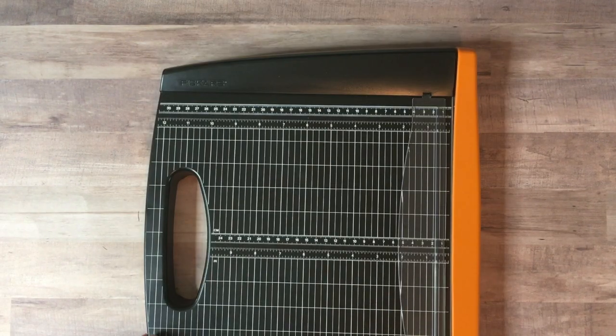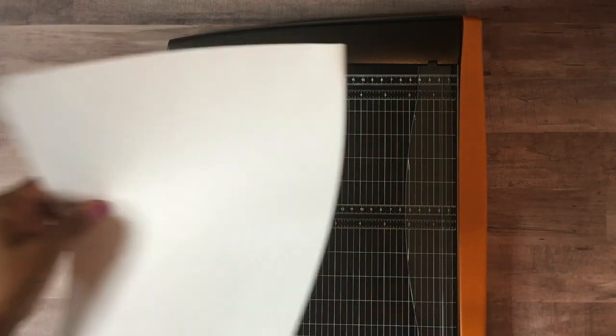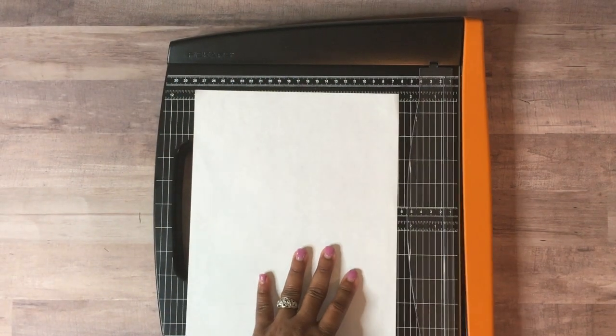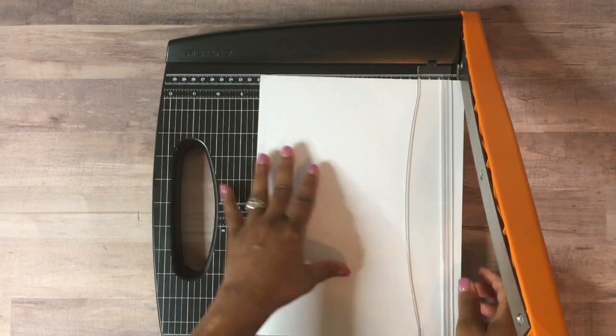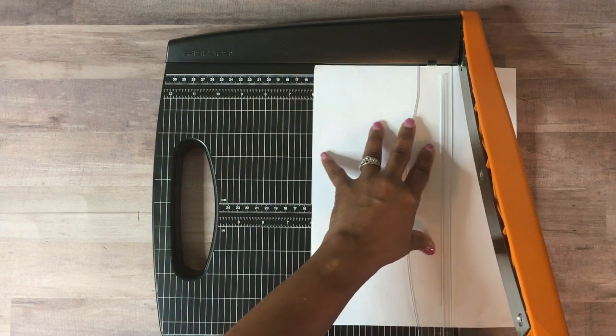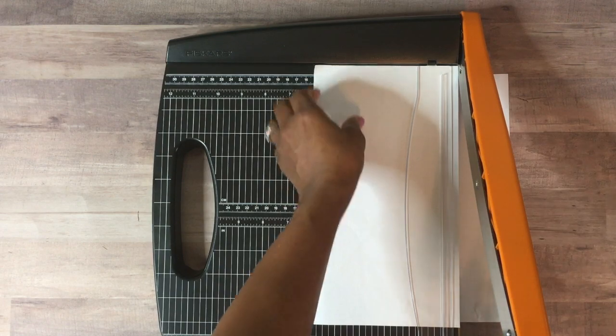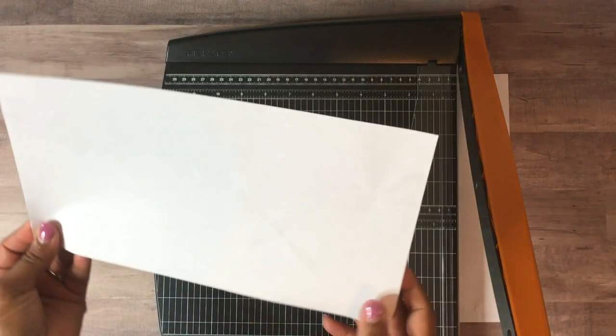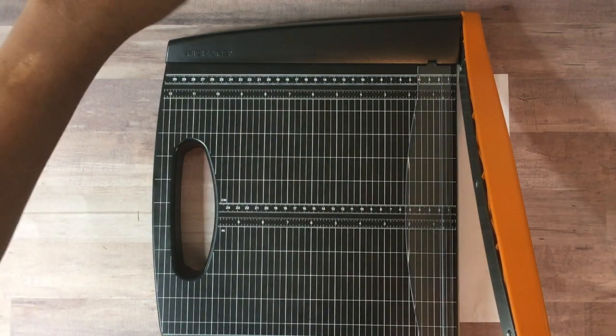Let's go ahead and trim some paper. I'm going to start with just one sheet of copy paper. I'm going to put it at six inches. We're going to hold this bar down, the guard down. Oh, that is nice. It is really a nice slice. Nice and clean.